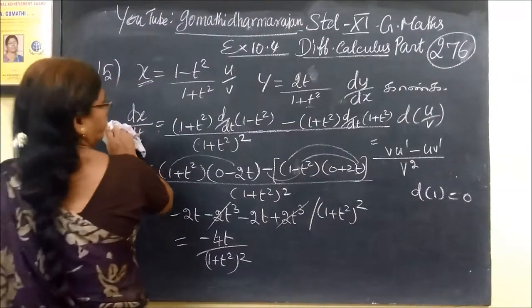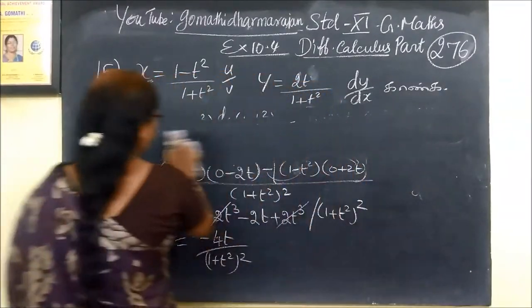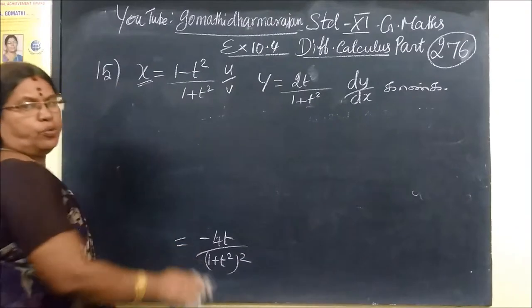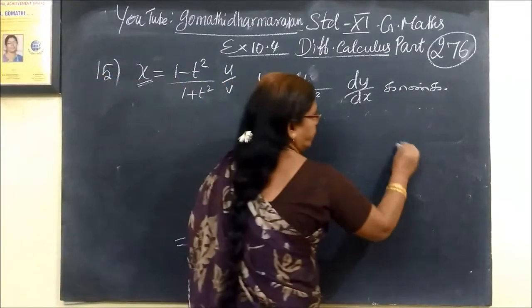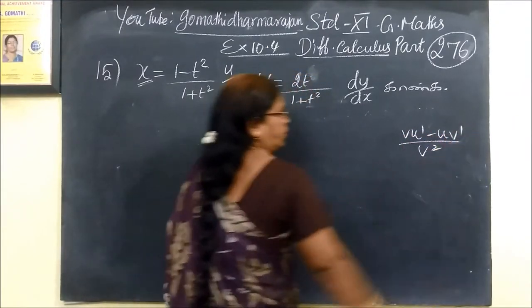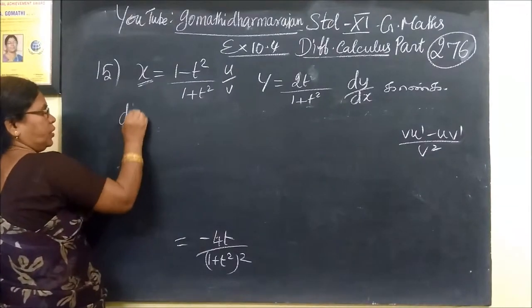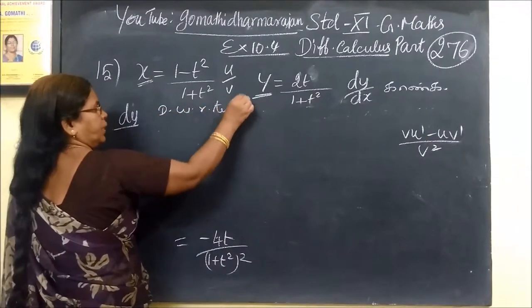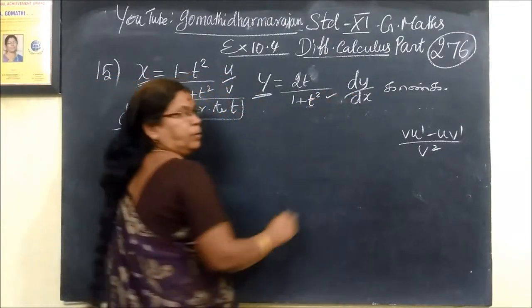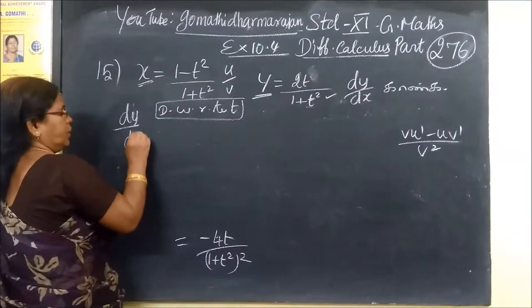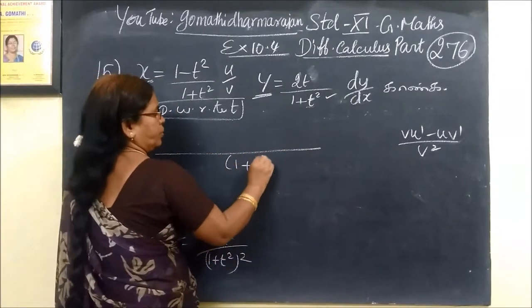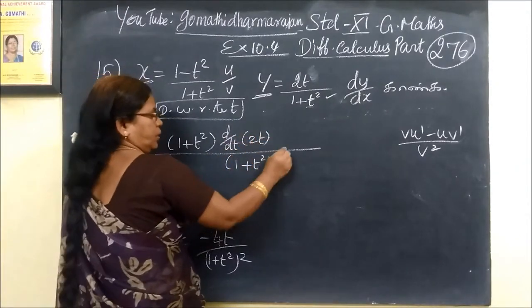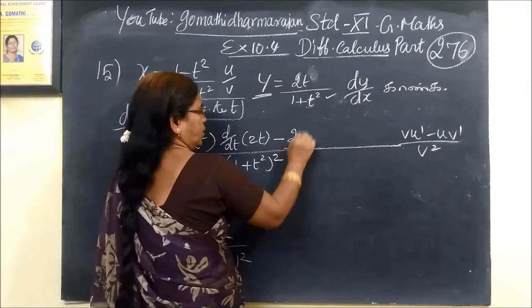Now we can do dy by dt. For this we are using the quotient rule — the first rule of the graph: d of u by v equals... Here we can say that's what is v squared. So u minus minus. Using the formula in the graph: dy — we can differentiate by, we can differentiate with respect to t. So this is dy by dt. This is 1 plus t squared the whole square. Write this as it is. Then d/dt of 2t, then minus sign. Minus — the 2t write as it is.